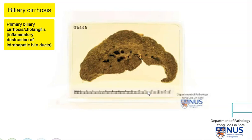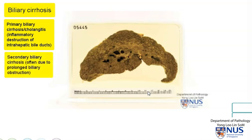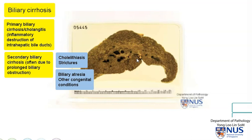Whereas in secondary biliary cirrhosis, it could be due to several causes. Most of the time, these causes are attributable to obstruction of the extrahepatic biliary tree. In adults, this could be due to choledolithiasis or stones. It could be due to strictures as well, which may have been iatrogenic or after surgery. And in children, biliary atresia is an important cause among other causes.